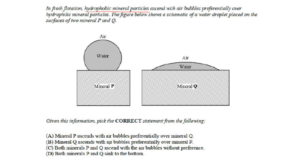The figure below shows a schematic of a water droplet placed on the surfaces of two minerals P and Q. One is mineral P and another is mineral Q. This is the water droplet and the next is air.